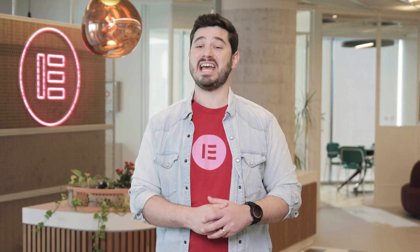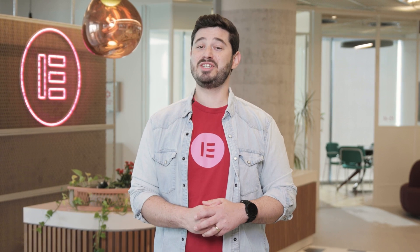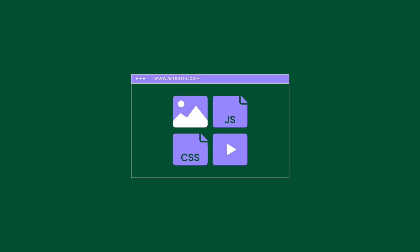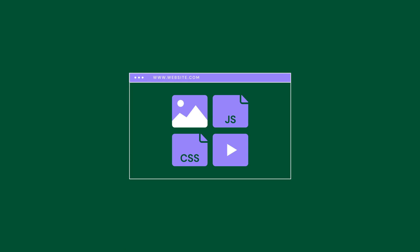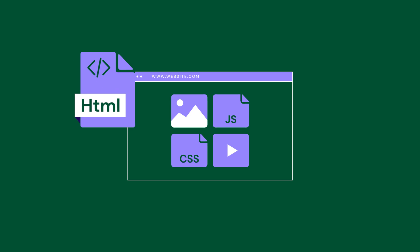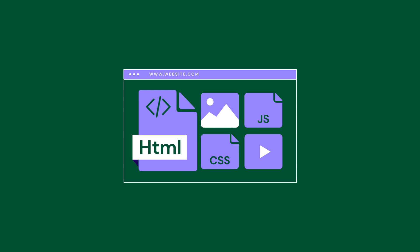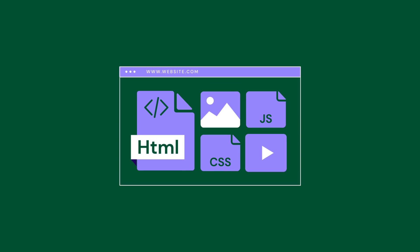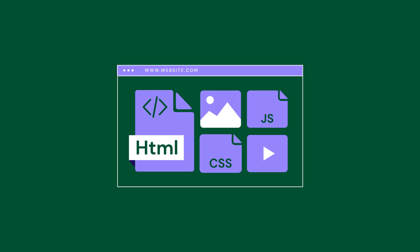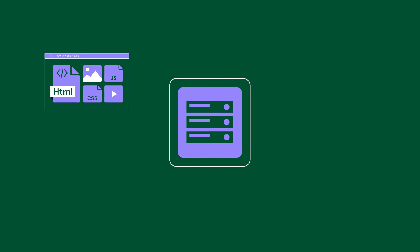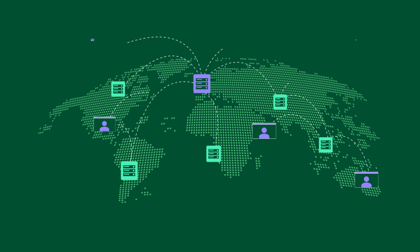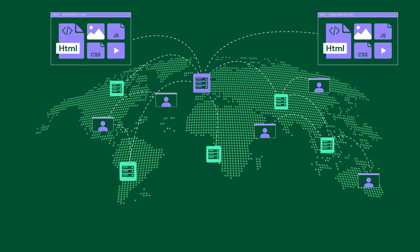First up, advanced caching. This feature enables you to massively boost your website's loading time by enhancing the cache to include HTML files along with other site assets, such as images, videos, and CSS, which are then ready to be served from over 285 locations worldwide.